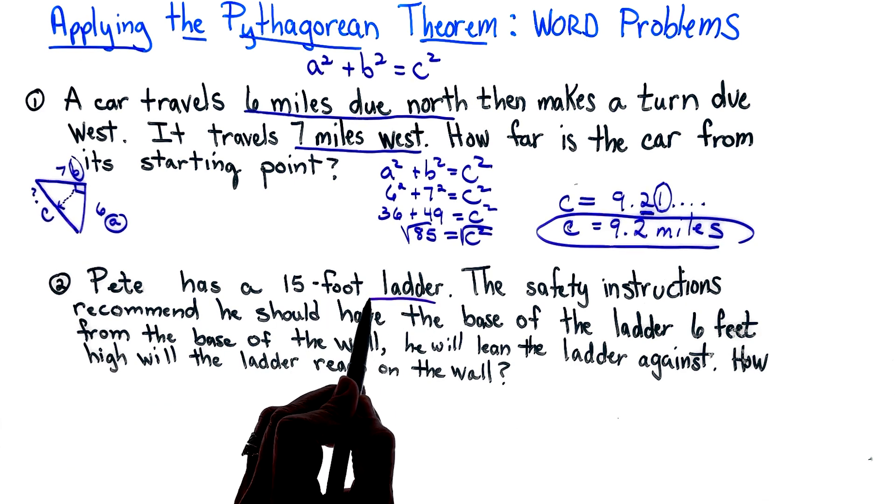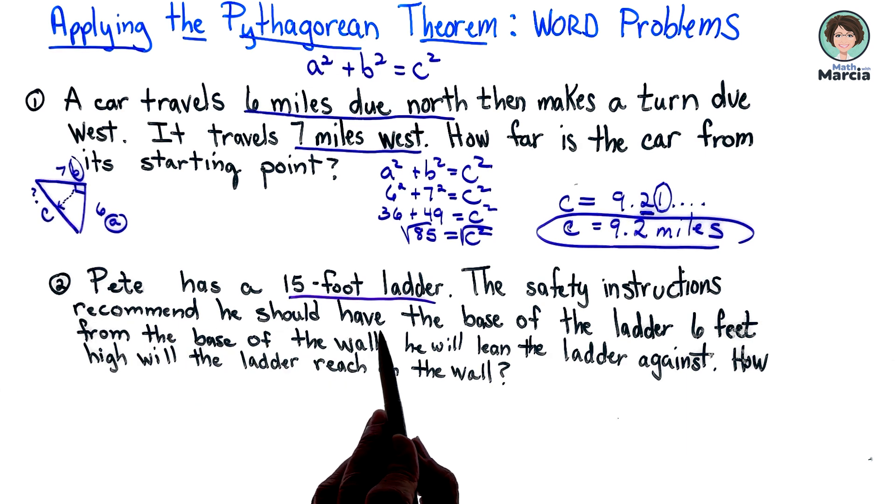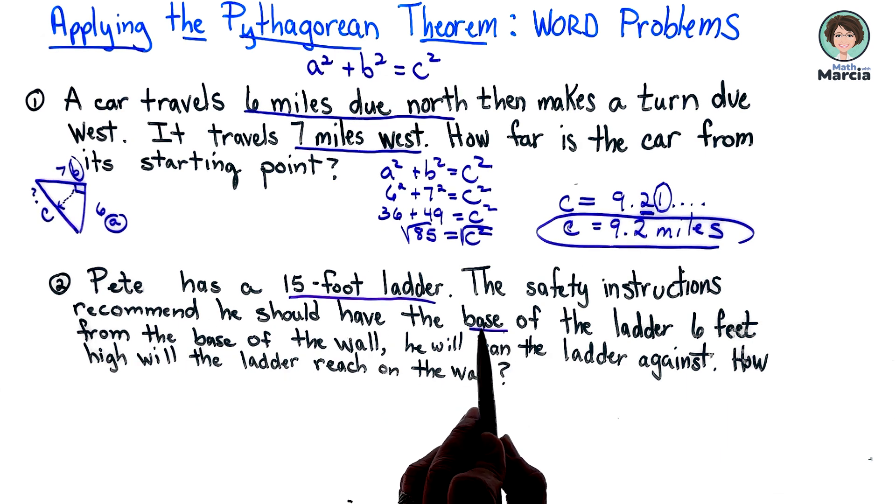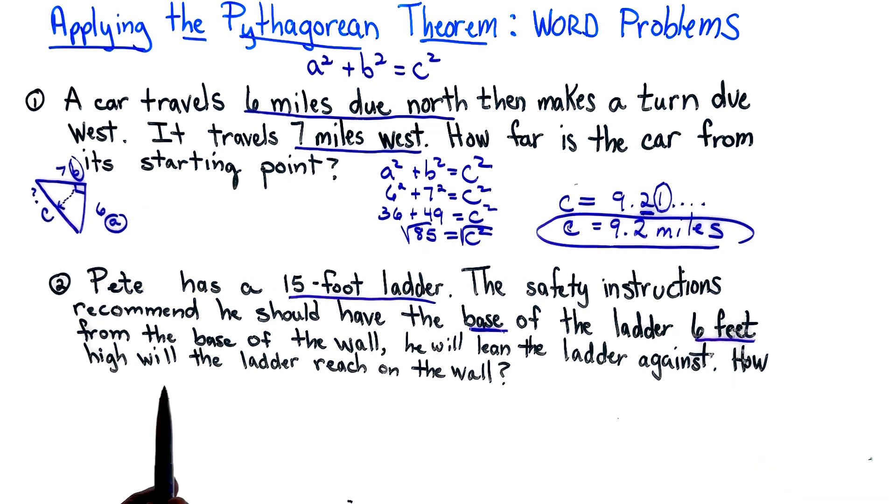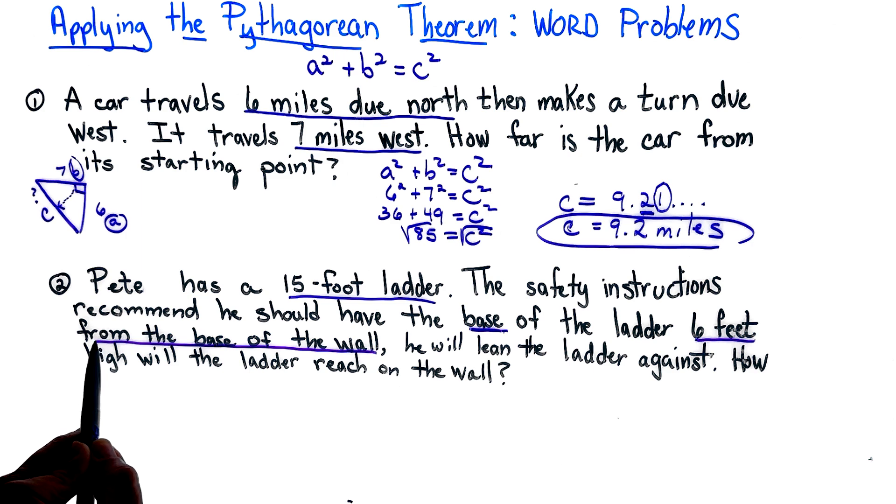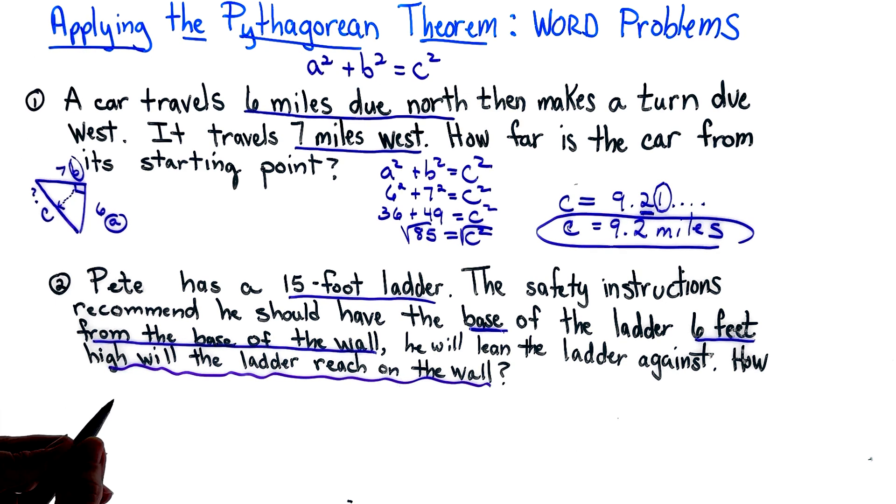Let's mark our text. We know we have a 15 foot ladder. We know that they want us to make sure that when he leans the base of the ladder, it needs to be six feet from the base of the wall. And what are we looking for? How high up does the ladder actually go up that wall?